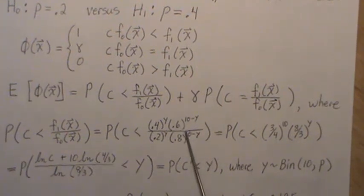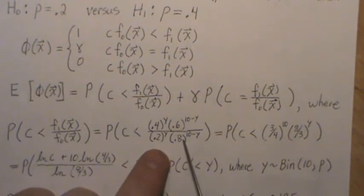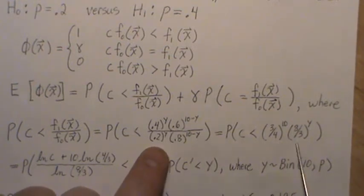So to look at this probability now, the only thing random here is Y. So let's try to isolate Y by itself.